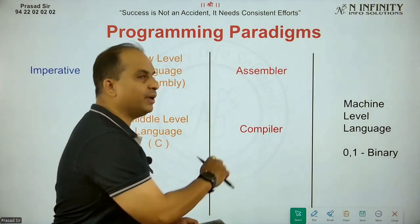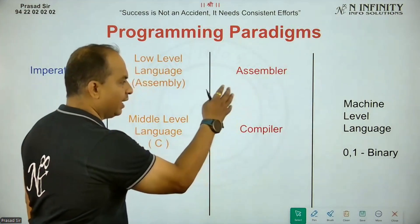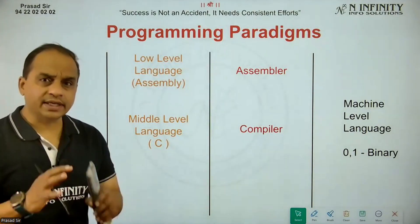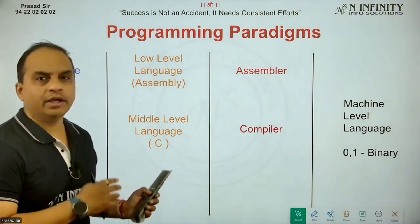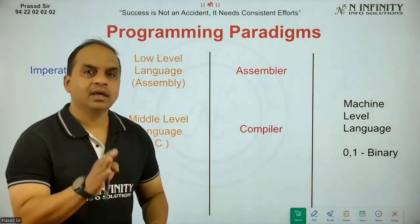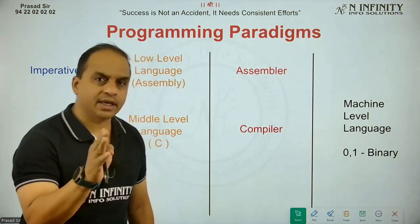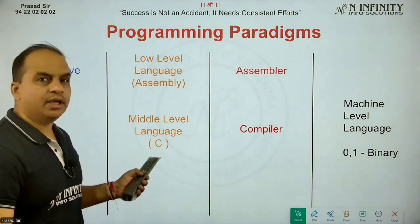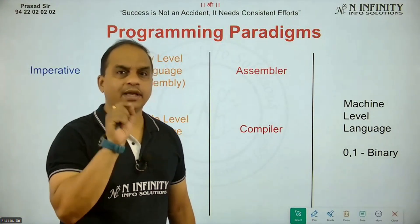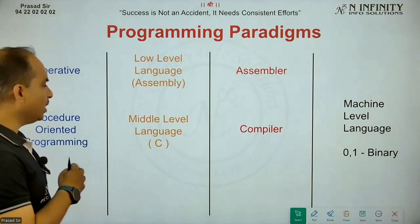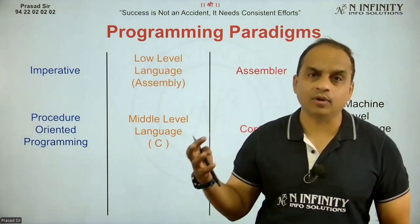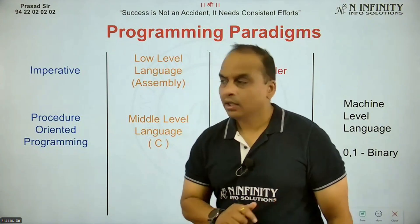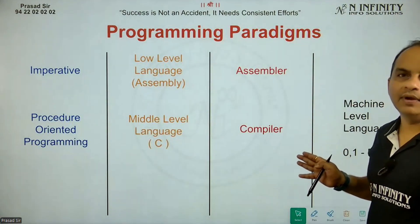Up to a certain extent, the C programming language was also supporting the imperative programming paradigm. But its main focus was that everything should be done through functions and procedures. We have studied that many functions are used in C programming language, and function is the basic unit of programming in C. Because of this, a new paradigm was generated — function-oriented programming, and since the basic name of a function is 'procedure,' it is called procedure-oriented programming, or POP.